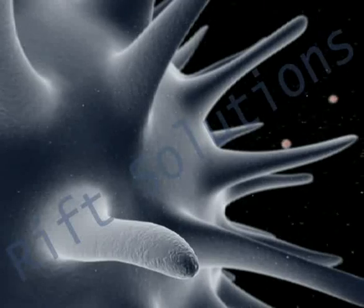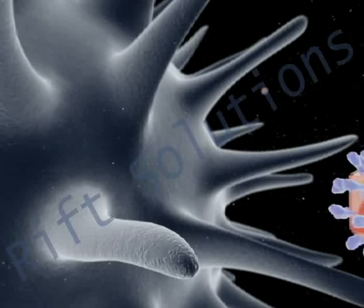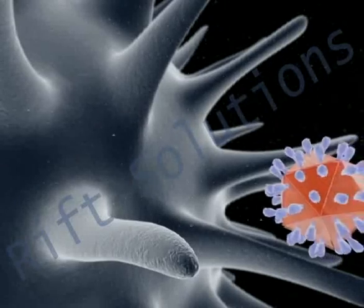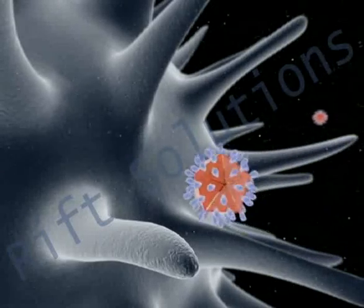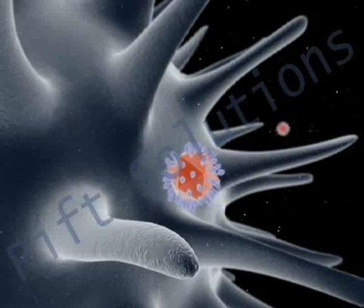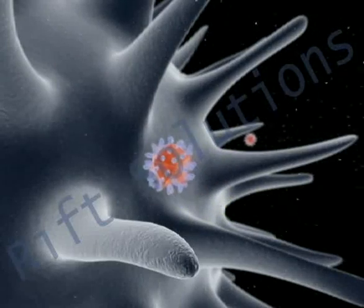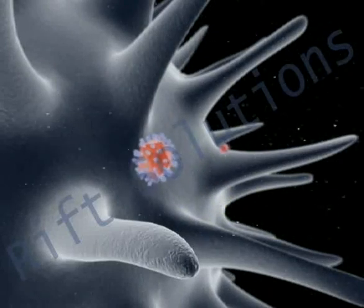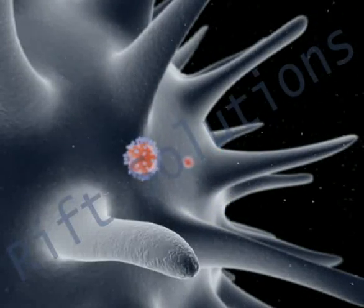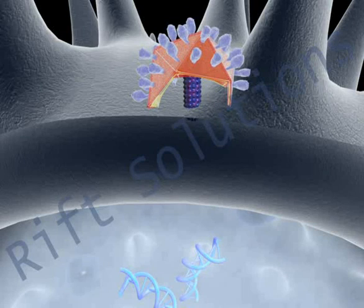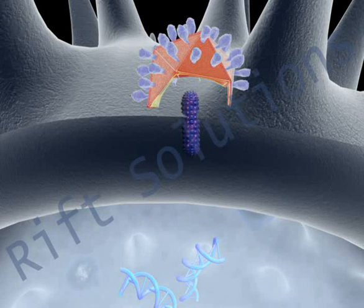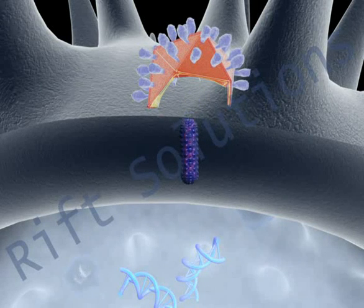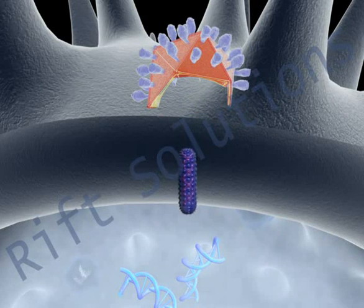Viruses exist for one purpose only: to reproduce. To do that, they have to take over the reproductive machinery of suitable host cells. Upon landing on an appropriate host cell, a virus gets its genetic material inside.